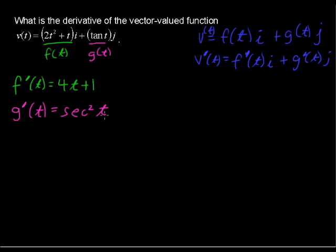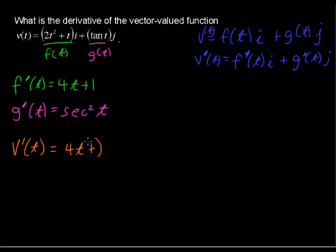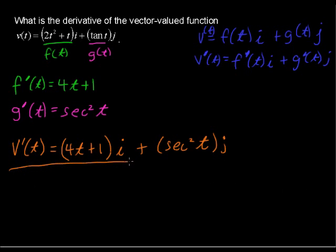We always look for the chain rule here, especially with trigonometric functions. But it's just t, so the chain rule results in secant squared of t times the derivative of t, which is just 1 — so we don't need to write that. We always check for the chain rule with trigonometric functions. So, v prime of t, the derivative of this vector-valued function, is 4t plus 1 times the i component, plus secant squared t times j, the vertical component. And that's the answer.